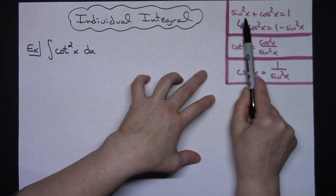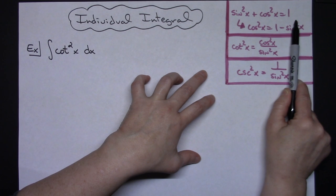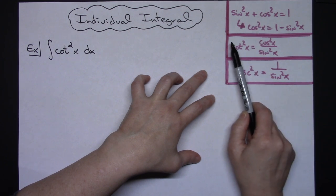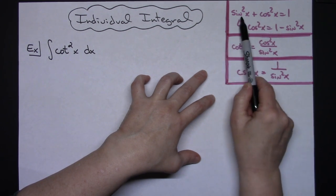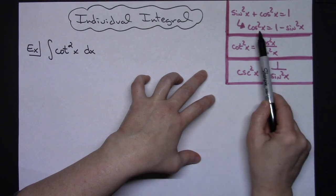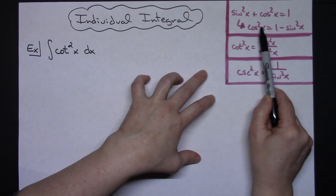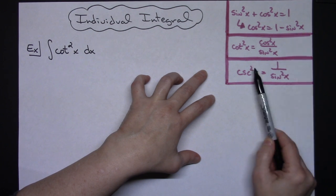The most common one is sine squared x plus cosine squared x equals 1. I can solve that for anything that I might need. I can solve it for cosine squared or sine squared. In this case I will be needing the cosine squared x is equal to 1 minus sine squared x.